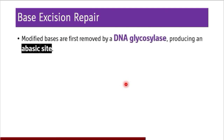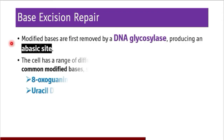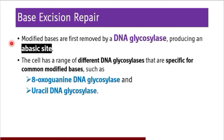The modified bases are first removed by DNA glycosylase, which has a crucial role in base excision repair. After removal of the modified bases, it produces what is called an abasic (AP) site. The cell has a range of different DNA glycosylases specific for common modified bases. Two DNA glycosylases usually seen are 8-oxoguanine DNA glycosylase and uracil DNA glycosylase. Uracil DNA glycosylase is always present because cytosine-to-uracil conversion happens at a very frequent rate — around 10,000 events per cell per day.